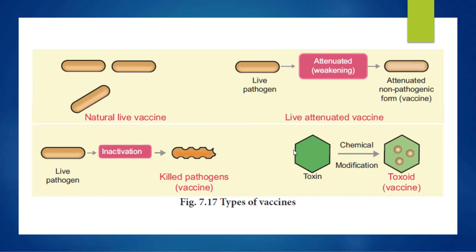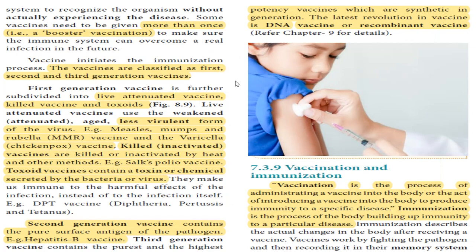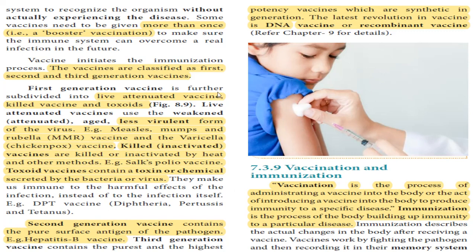These are the types of vaccines. Based on the immunization process, vaccines are classified into three generations: first generation, second generation, and third generation vaccines. First generation vaccines are live attenuated vaccines — for example, the MMR vaccine for measles and mumps — and killed vaccines.